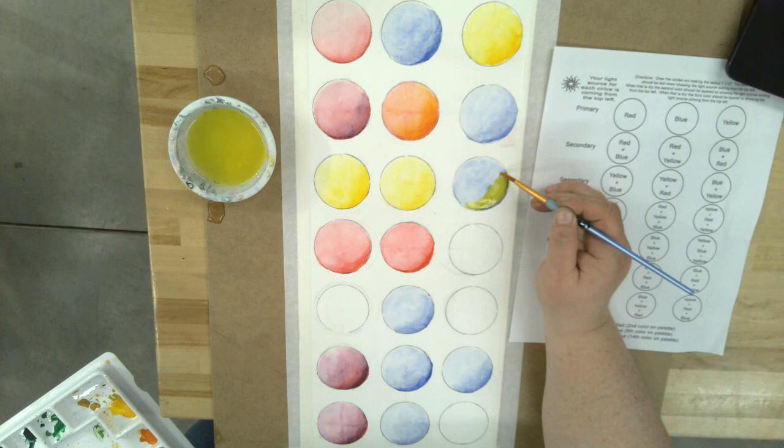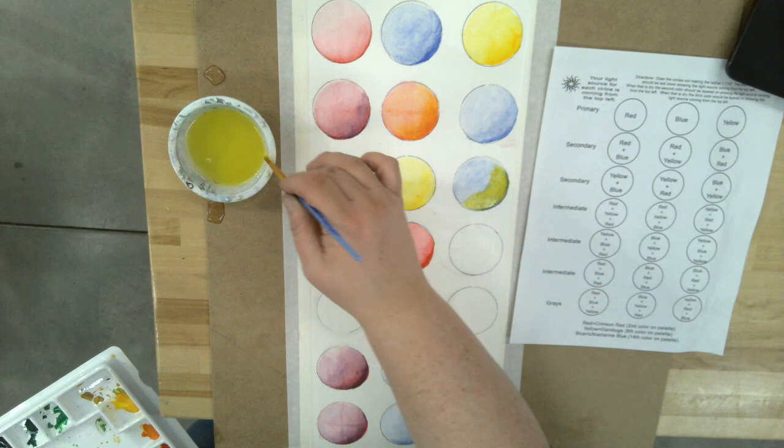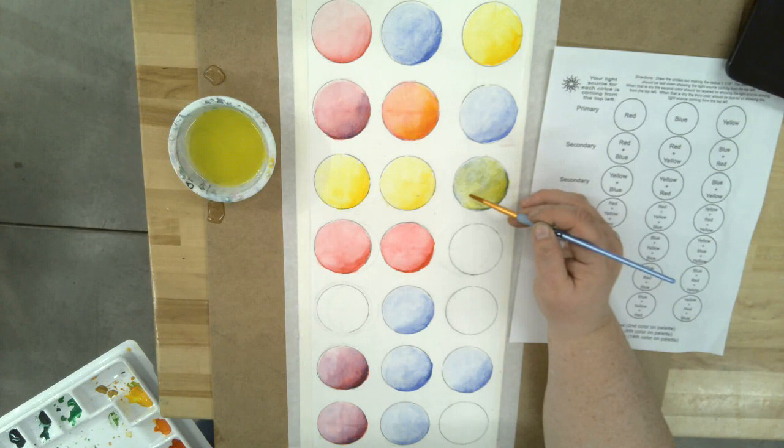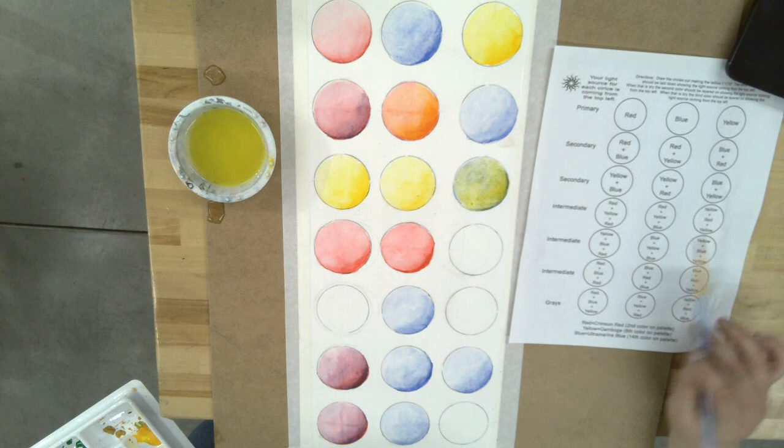Watercolor is a lot about layering and glazing, so we really want to experiment with that so you kind of know what happens, what colors you'll get when you glaze and layer. The key is everything's got to be dry before you layer another color or you have a muddy mess.